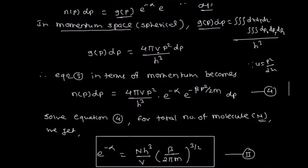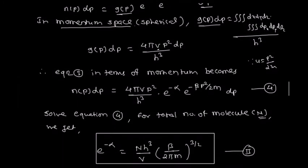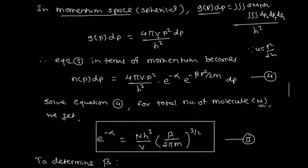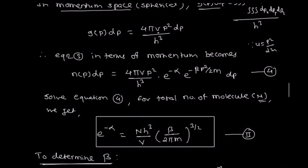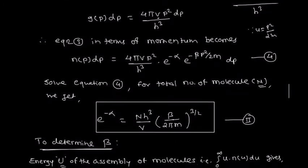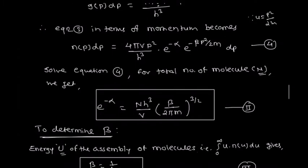Simplifying, the constant e^(minus alpha) equals N·h³/V times (beta/2πm)^(3/2). This is one of the constants we determine here. Now we find the other constant, beta.